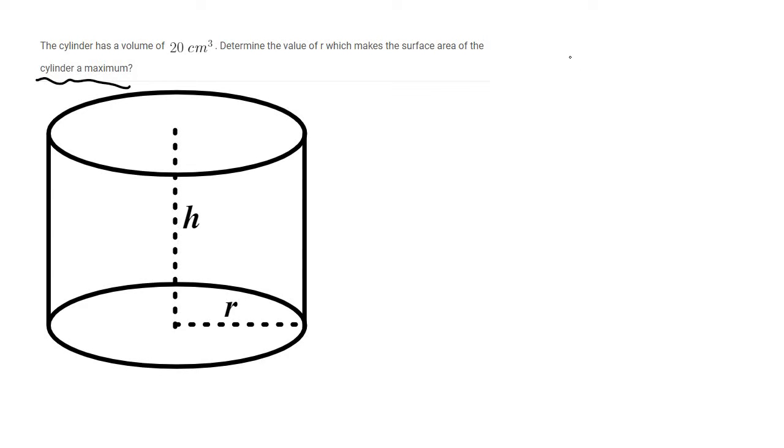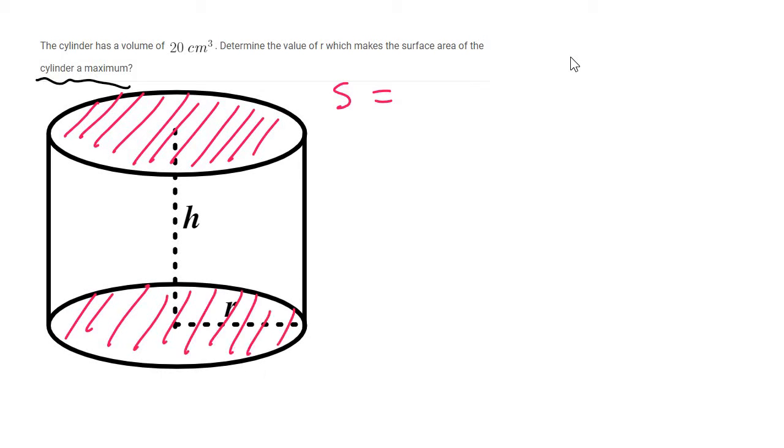So straight away you go find a formula for surface area. Now if you look at the shape, it's a cylinder. If you had to paint the outside, you would be painting a circle at the top and there would be a circle at the bottom. Now a circle area is pi R squared, but there's two of them, so we'll say 2 pi R squared.